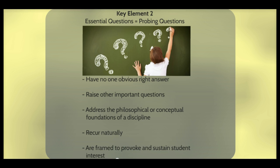The second key element of UBD is the process of asking essential or probing questions, and includes all the components listed here. They can take the traditional form of a verbal or written question in the classroom, but they can also be expressed through many things such as role plays, demonstrations, and exhibits. However the questions are posed to the students, they must evoke more questions, more thought about the ideas, and they have no right answer. We'll talk more about essential questions next week.